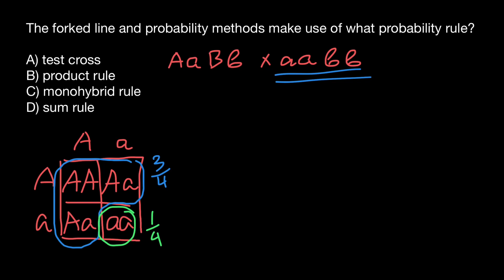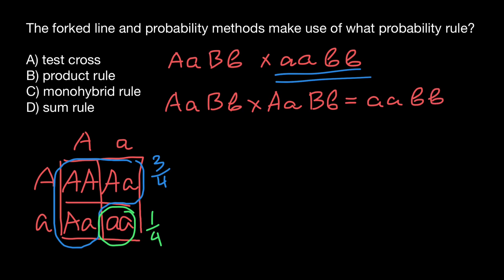Now let's talk about the product rule and sum rule. Imagine that we have a cross of one genotype with another of the same genotype. The question is: what is the probability that the progeny is going to be homozygous recessive for both genes? We can use the fork line method to find the answer. If we take gene A — one parent is heterozygous for gene A, and the other is also heterozygous for gene A.